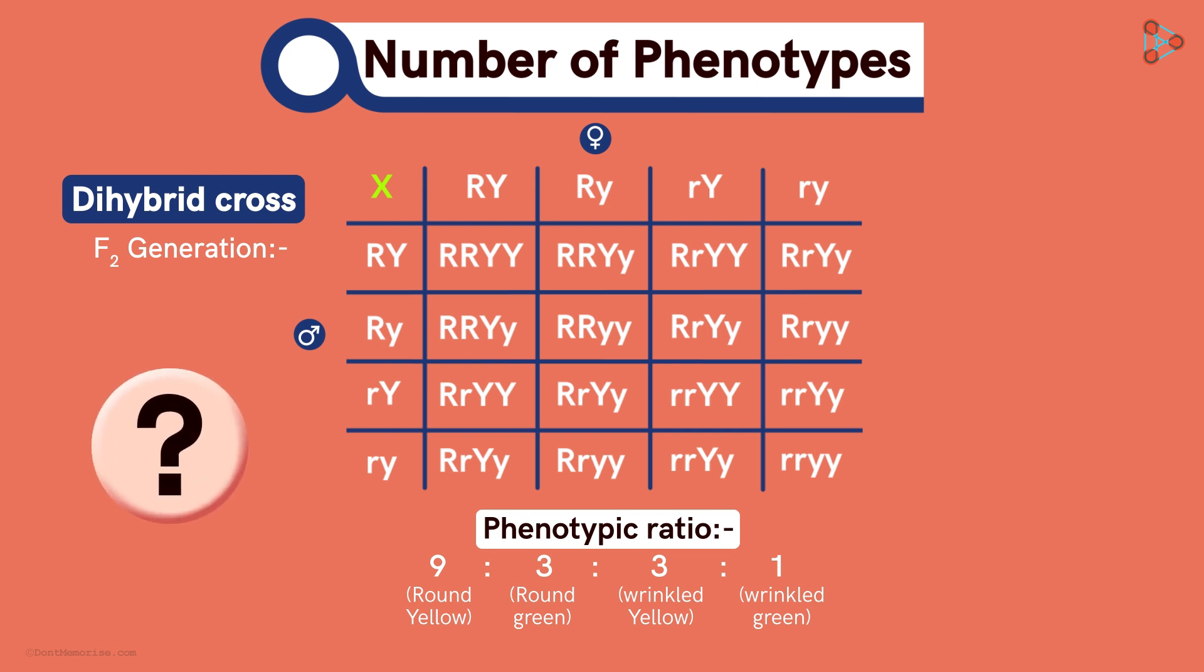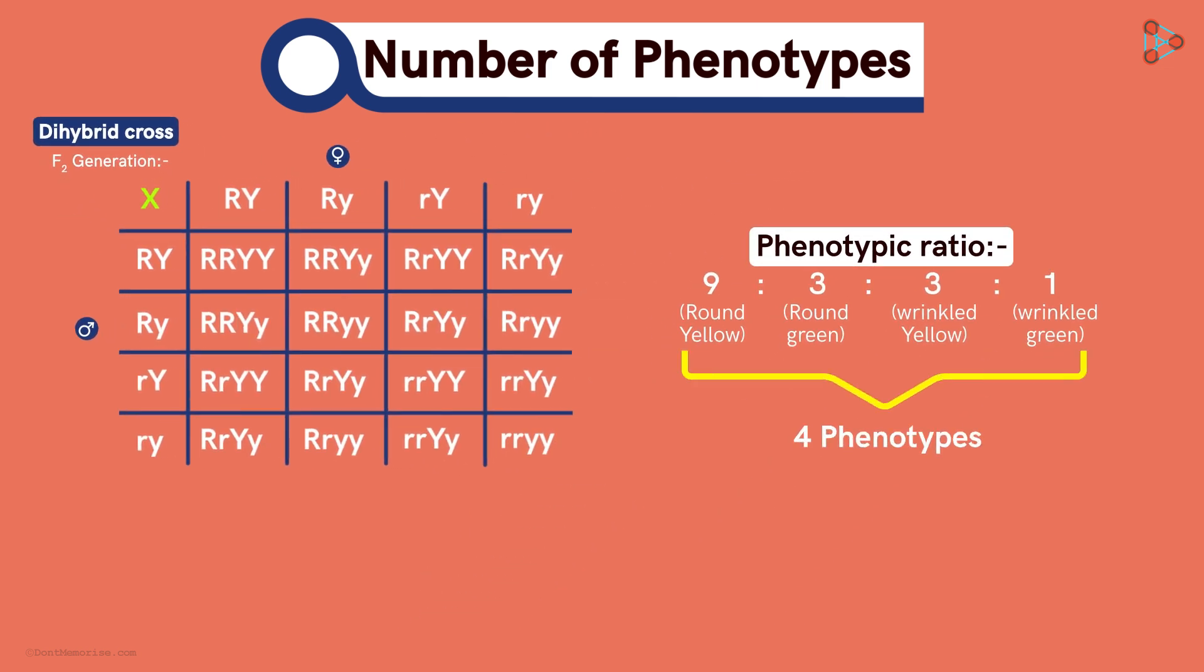What will be the number of phenotypes in the F2 generation? As there are 4 different varieties of plants, we can say that there are 4 phenotypes! You should know that a dihybrid cross always gives us 4 different phenotypes in the F2 generation!